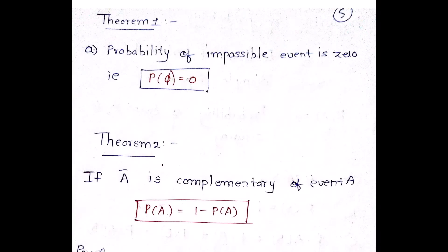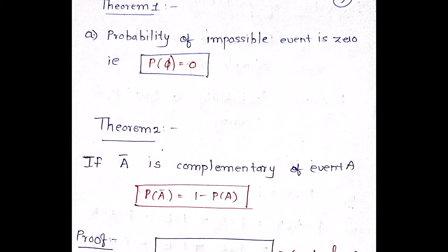So the first theorem is the probability of an impossible event is zero. So if I consider there is some impossible event, the probability is going to be zero of it. For example, if I say I'm throwing a die and what is the probability of getting 7? So you cannot get a 7 in a die.